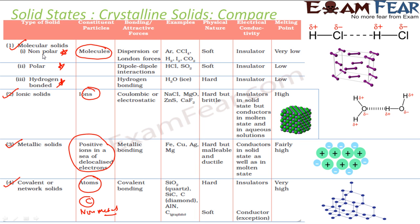Now if we talk about the nonpolar molecular solid, the London dispersion force was acting there because they are nonpolar. Examples include I₂, H₂, and CO₂. They are soft and they are insulators. They have very weak forces of attraction, so they have very low melting points.